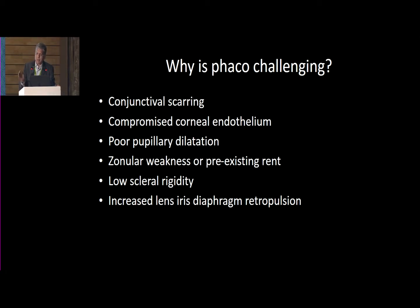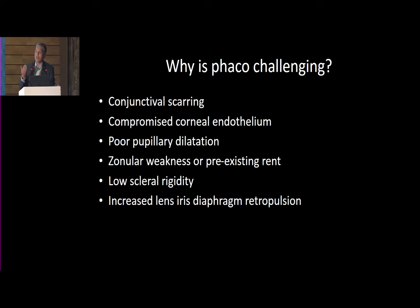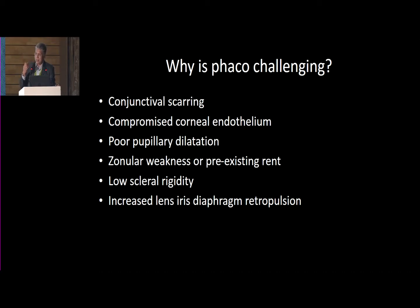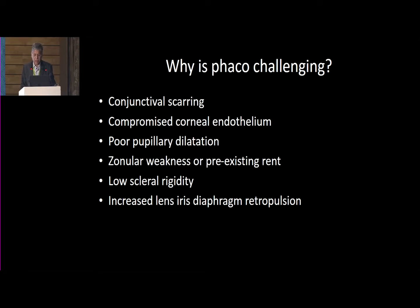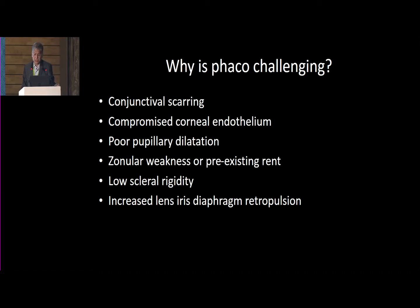The cornea may have a compromised endothelium. When the patient comes to you, they might have had a silicone oil removal, and there could have been silicone oil in the anterior chamber previously, which has led to a reduced endothelial count. There can be poor pupillary dilatation, zonular weakness, or a pre-existing rent. There is low scleral rigidity and an increased lens-iris diaphragm retropulsion.